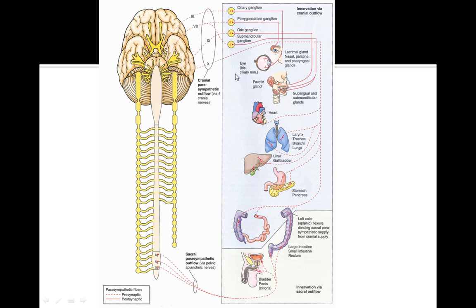Cranial nerve 9, which originates from the medulla, goes to the otic ganglion and innervates the parotid gland — so cranial nerve 9 goes to the otic ganglion to the parotid gland. The vagus nerve also originates from the medulla and innervates several structures: the heart, the bronchial tree, the esophagus lower two-thirds, stomach, small intestine, liver, gallbladder, pancreas, kidney and upper ureter, ovaries and testes, and the ascending and transverse colon.